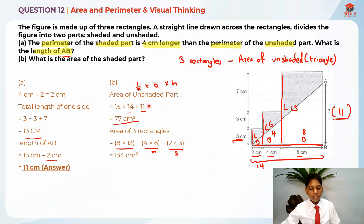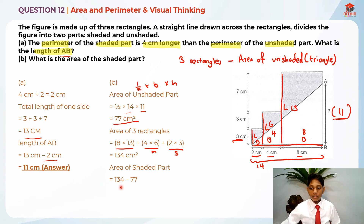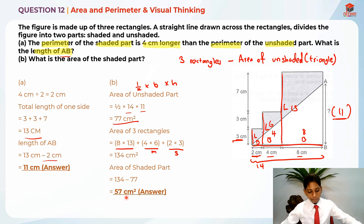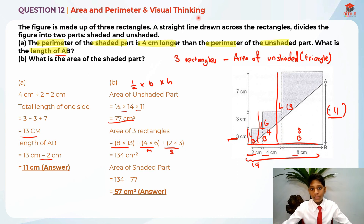To find the area of the shaded part, we take the area of the 3 rectangles minus the area of the unshaded part: 134 cm² minus 77 cm² gives us the answer of 57 cm² as the area of the shaded part. So 57 cm² is the answer for part B, and 11 cm is the answer for part A. I hope you understood my explanation for this question on area and perimeter. Thank you and goodbye — I'll see you in my next video!